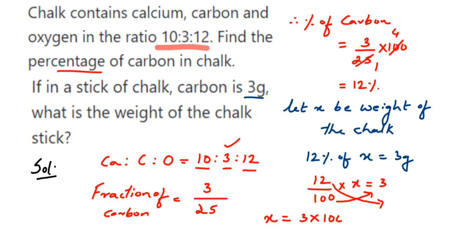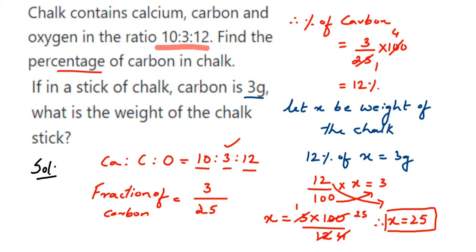So x = (3 × 100) / 12. Cancel 3 and 12: 3 fours are 12. Cancel 4 and 100: 4 twenty-fives are 100. Therefore x = 25 grams. The total weight of the chalk stick is 25 grams.